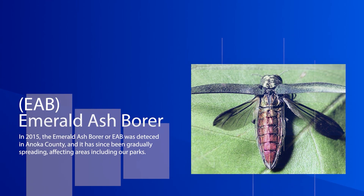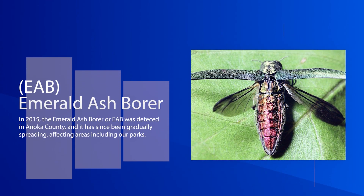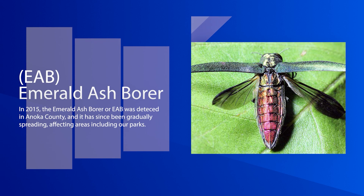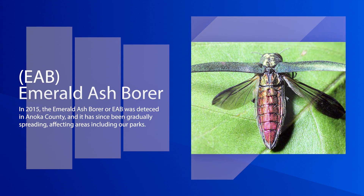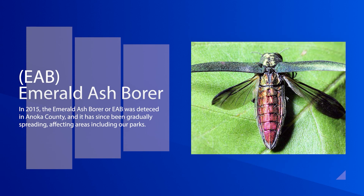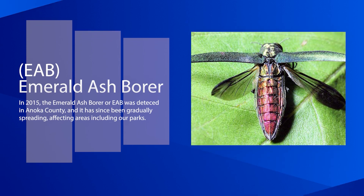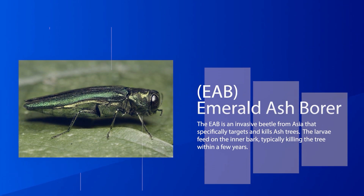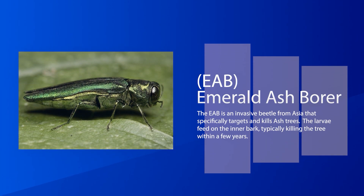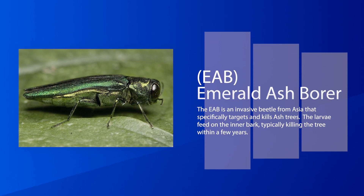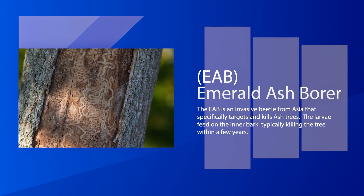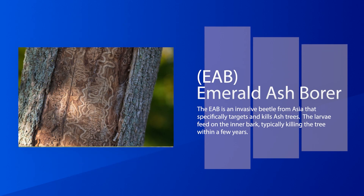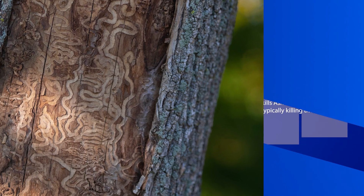In 2015, the Emerald Ash Borer, or EAB, was detected in Anoka County, and it has since been gradually spreading, affecting areas including our parks. The EAB is an evasive beetle from Asia that specifically targets and kills ash trees. The larvae feed on the inner bark, typically killing the tree within a few years.